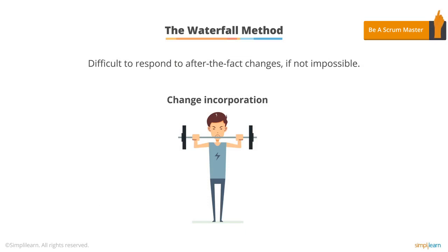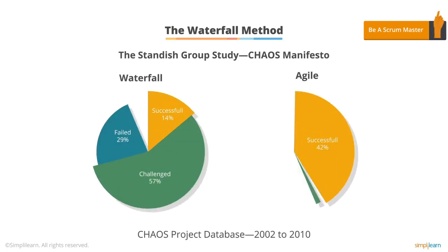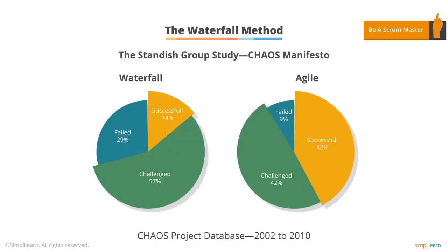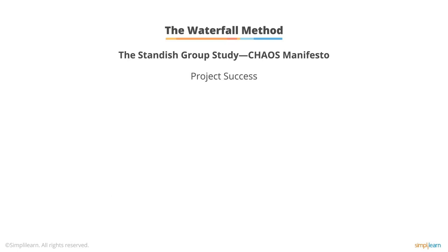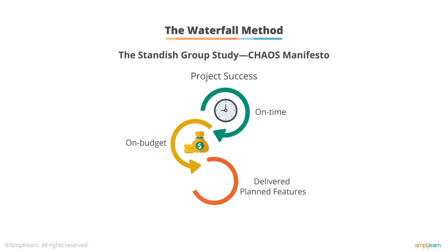In fact, the Standish Group issued a study that showed that software development projects using the Agile approach succeed three times more often than when using the waterfall approach. The Standish Group defined project success as being on time, on budget, and delivering all of the planned features.